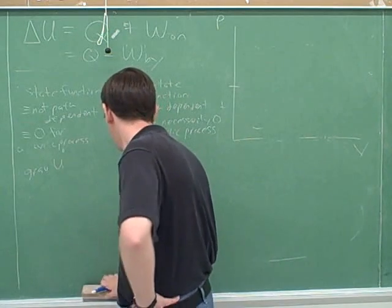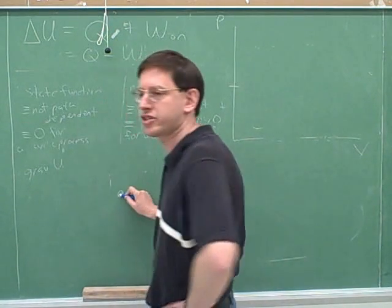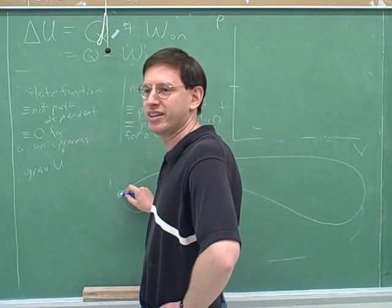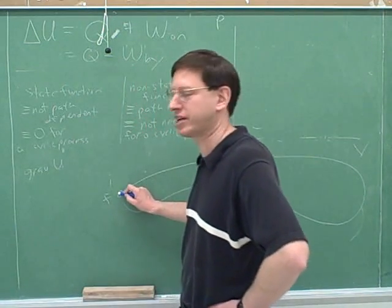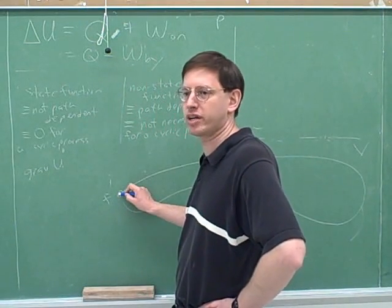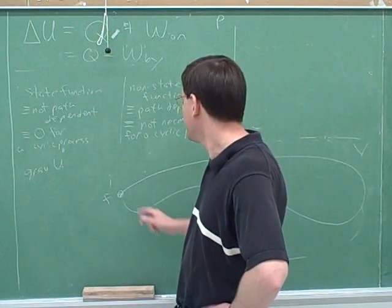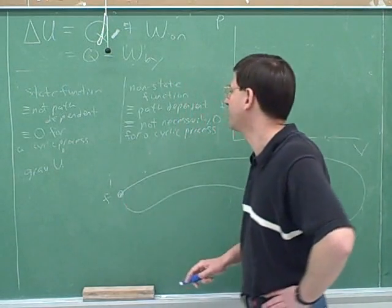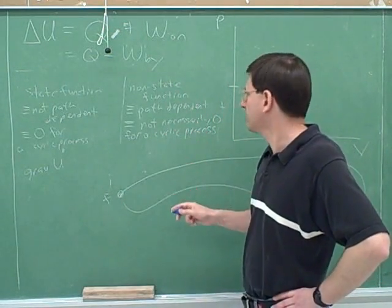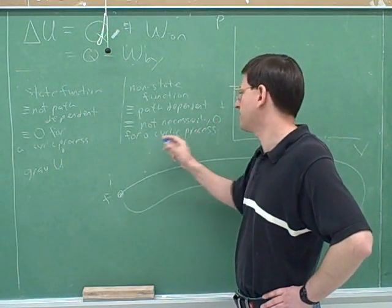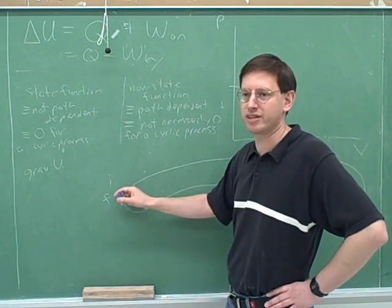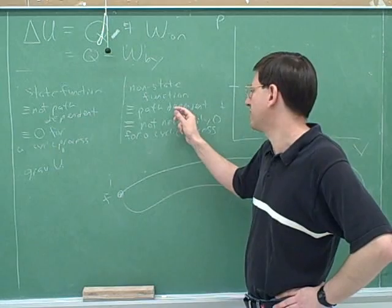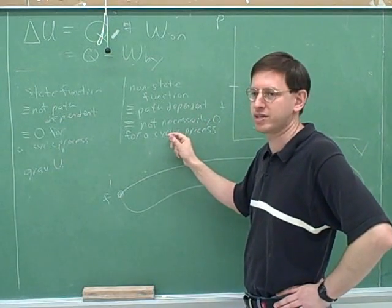To take another example: the chalk starts here, I move it around the board, and end up back here. The initial point is the same as the final point — this was cyclic. Did friction do any work? Yes — I felt friction doing work all along the path. The friction isn't zero just because this was a cyclic process. For a non-state function, it doesn't have to be zero even for a cyclic process, even when you end up where you started. So the work done by friction is a good example of a non-state function.